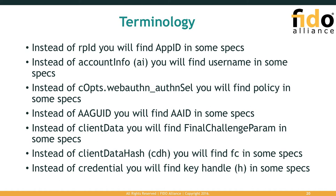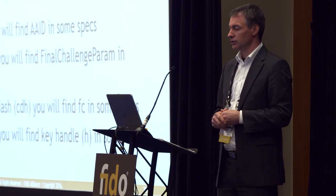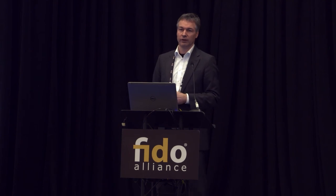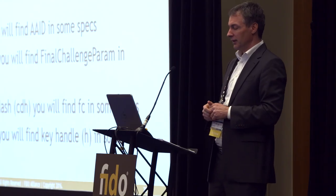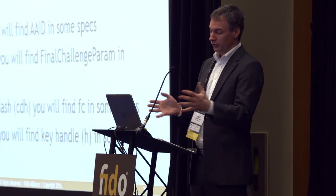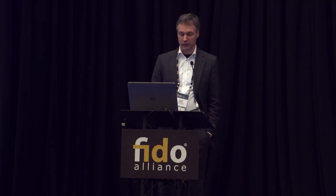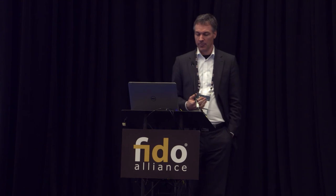If you read the different standards, you might see changes in terminology. Instead of relying party ID, you might find app ID in some specifications. Instead of account info, you might find username in UAF. Instead of options, you find policy or authenticator selection in other specs. The AAGUID is sometimes called AEID. Client data is the new name for final challenge parameters. But from a fundamental perspective, it's still the same — it's exactly what was defined in the beginning. It's just terminology changes and data structures that vary slightly.